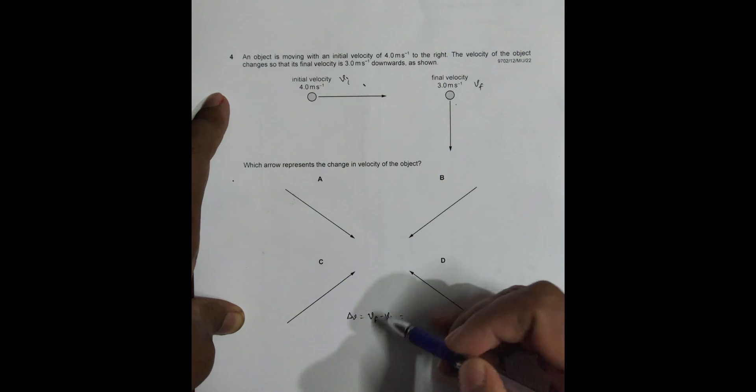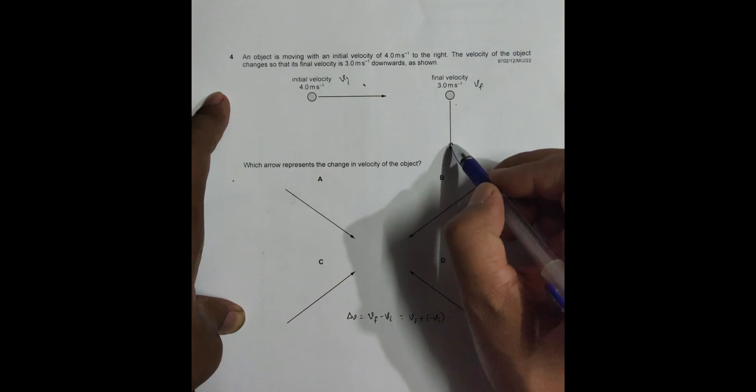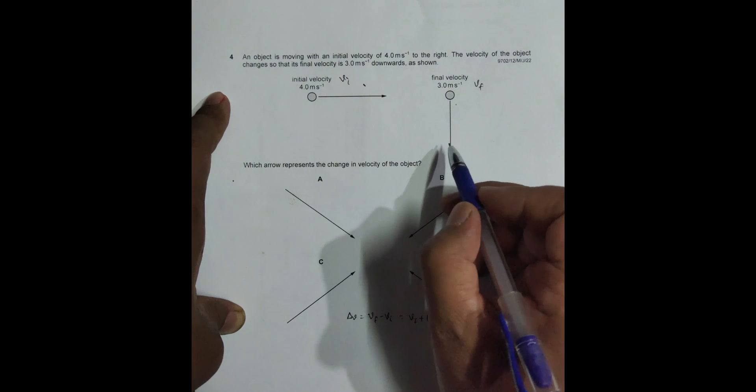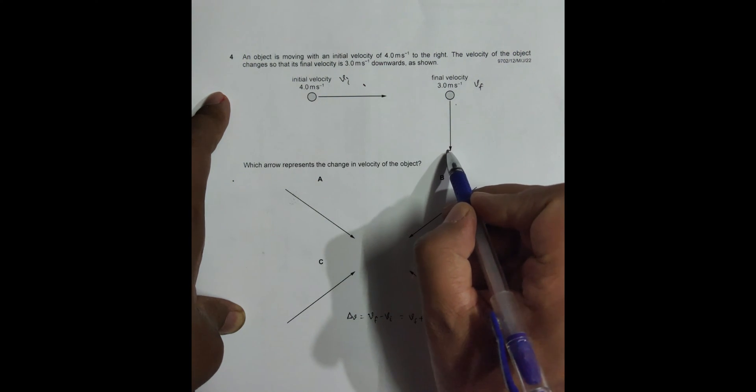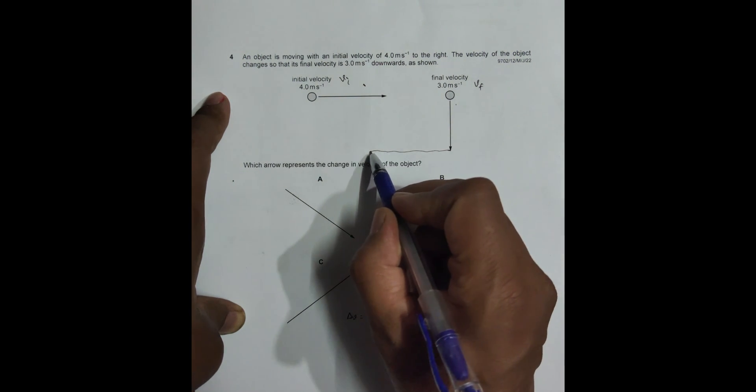But minus Vi should be equal to... so this is Vf plus minus Vi. Because we don't have something as vector subtraction, it is the addition of a negative vector to that. So that's why we do minus Vi. So here we have to add minus Vi. So when I add minus Vi, it should be equal to... this will be minus Vi.